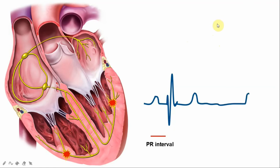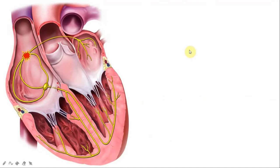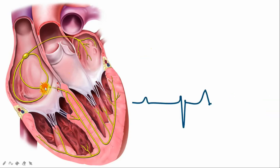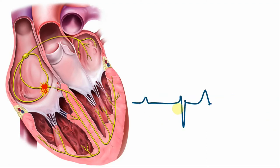Let's see what happens in first degree AV block — please keep an eye on the PR interval, from the beginning of the P wave to the beginning of the QRS complex. In this patient the SA node is generating the cardiac impulse, but there is a longer delay in the AV node. As a consequence, the PR interval from the beginning of the P wave to the beginning of the QRS complex becomes prolonged, and the moment it crosses the threshold of 200 milliseconds, we call it a first degree atrioventricular block.